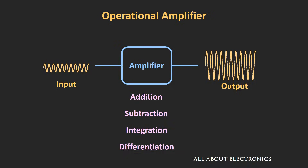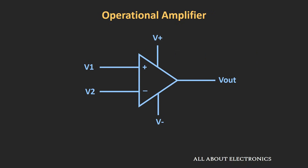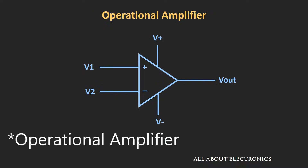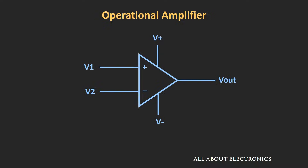If you see the circuit symbol of the operational amplifier, it consists of two inputs and one output. Most op-amps consist of two power supplies — the positive and the negative. But there are many op-amp ICs which run on a single power supply. The input terminal marked by the positive sign is known as the non-inverting input terminal, and the terminal marked by the negative sign is known as the inverting input terminal.